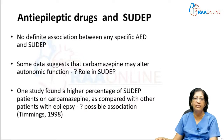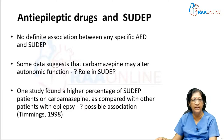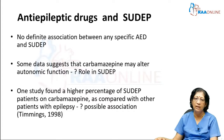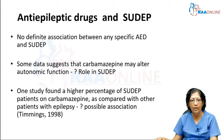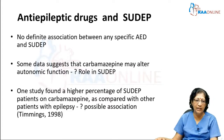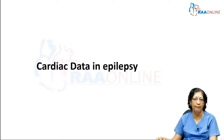Is any particular drug associated with SUDEP? No definite association with any specific anti-epileptic drug and SUDEP has been recognized. Though earlier data suggested carbamazepine may alter autonomic functions and can cause SUDEP, nothing is established. One study found a higher percentage of SUDEP patients on carbamazepine compared to other drugs in epilepsy, but there is only a possible association — nothing definite has been written in this regard.